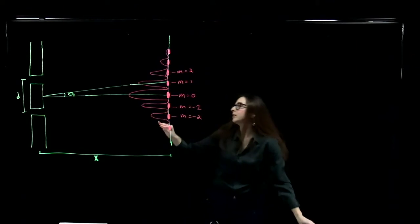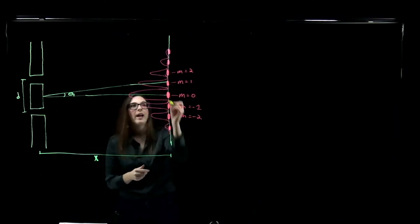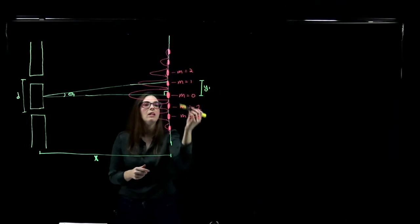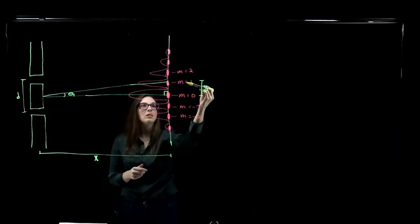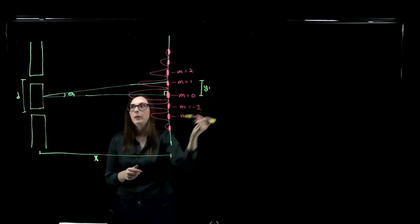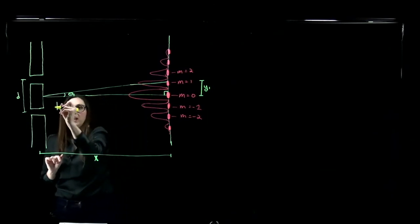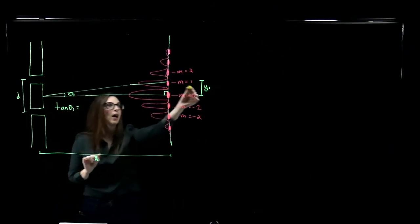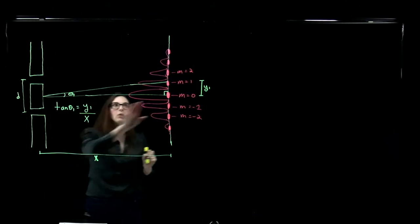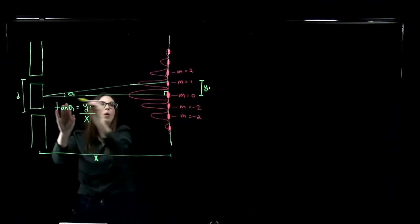We can draw a little right triangle where the base is the distance between my slit and my screen, and the vertical part is the distance y1 - the distance between consecutive fringes, specifically between m equals 0 and m equals 1 bright points. The angle theta sits inside this right triangle, and the tangent of theta equals the opposite side y divided by the adjacent side x. So tangent of theta equals y over x.